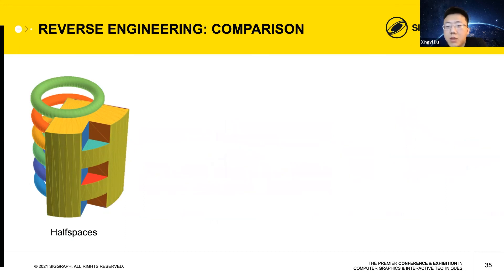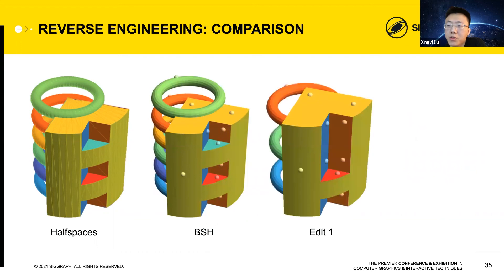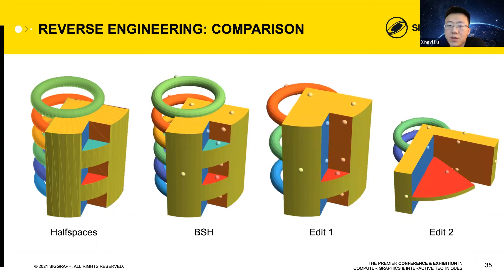In contrast, by converting the input to BSH, we can easily modify the shape such as removing some rings and a shelf, and changing the dimension of structure or even detaching a shelf from a wall. All these edits are achieved by either changing the parameters of the primitives or their samples.